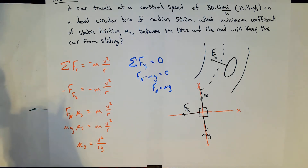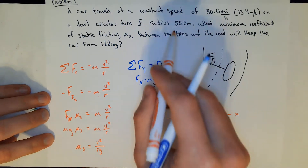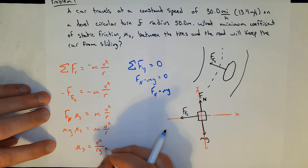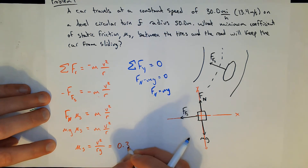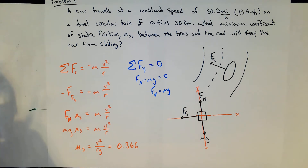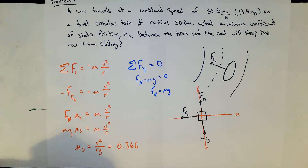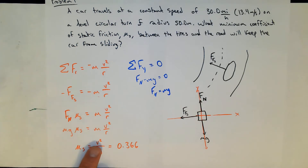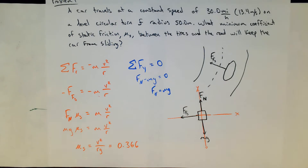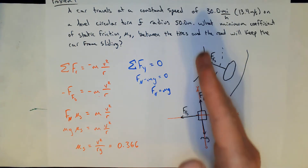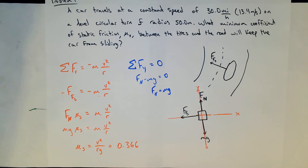Plugging in v = 13.4 m/s, r = 50 m, and g = 9.8 m/s², the minimum coefficient of static friction is 0.366. Any more slippery and the car's speed is too great — it will slide instead of maintaining grip and turning in a circle.